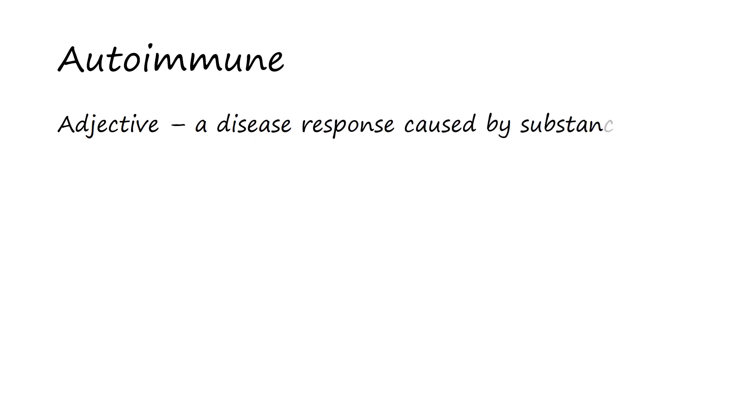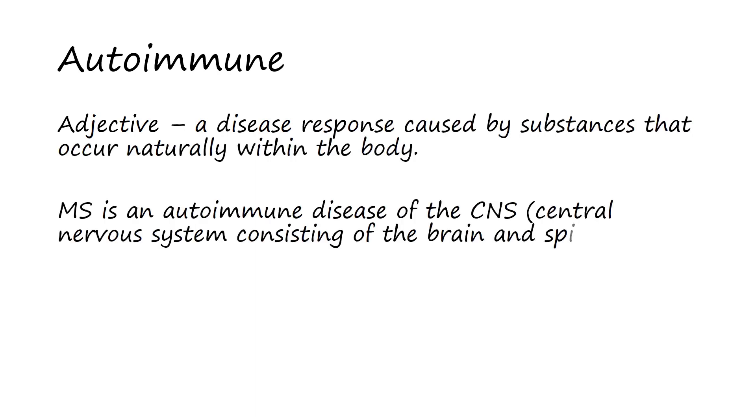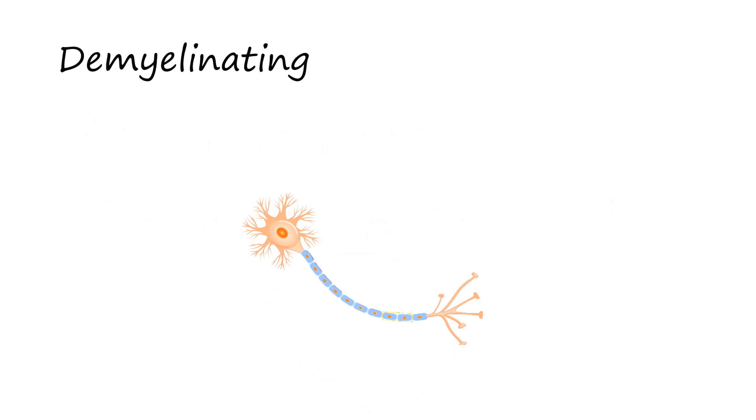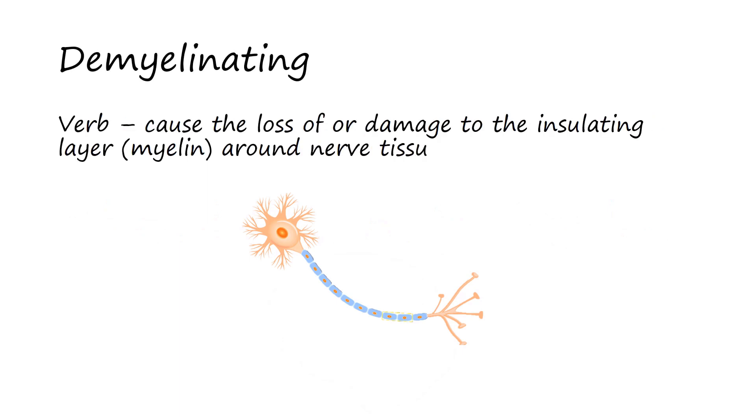Multiple sclerosis is an autoimmune condition affecting the central nervous system, which consists of the brain and the spinal cord. It is one of a group of conditions we call demyelinating disorders, which simply means that as the disease progresses, it removes the conductive sheath known as myelin from nerves.